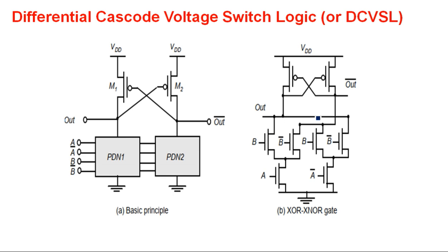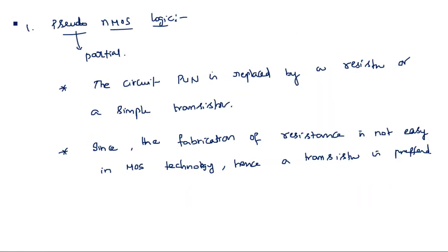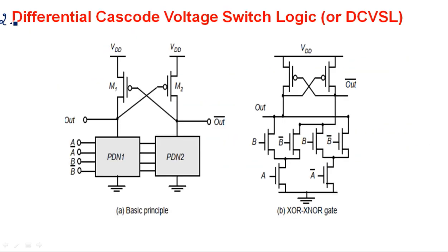Pseudo NMOS logic gets its name because pseudo means partial — we are partially using a PMOS transistor and partially using an NMOS logic circuit design. Now the second type under ratioed logic is DCVSL, differential cascode voltage swing logic.